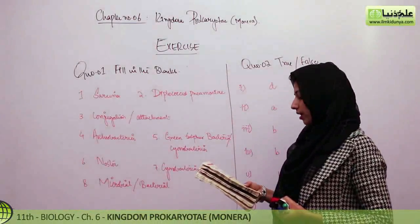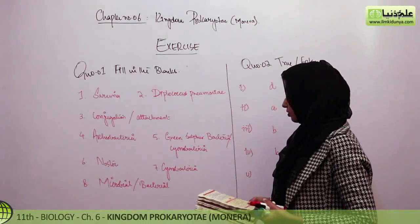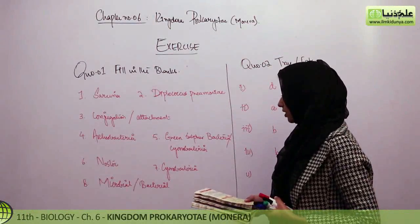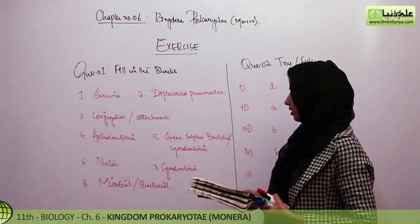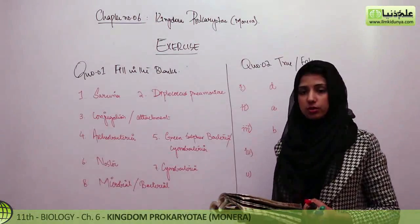Cyanobacteria is called a bloom-forming organism. Here, after cyanobacteria, you can also write an example for the exam.